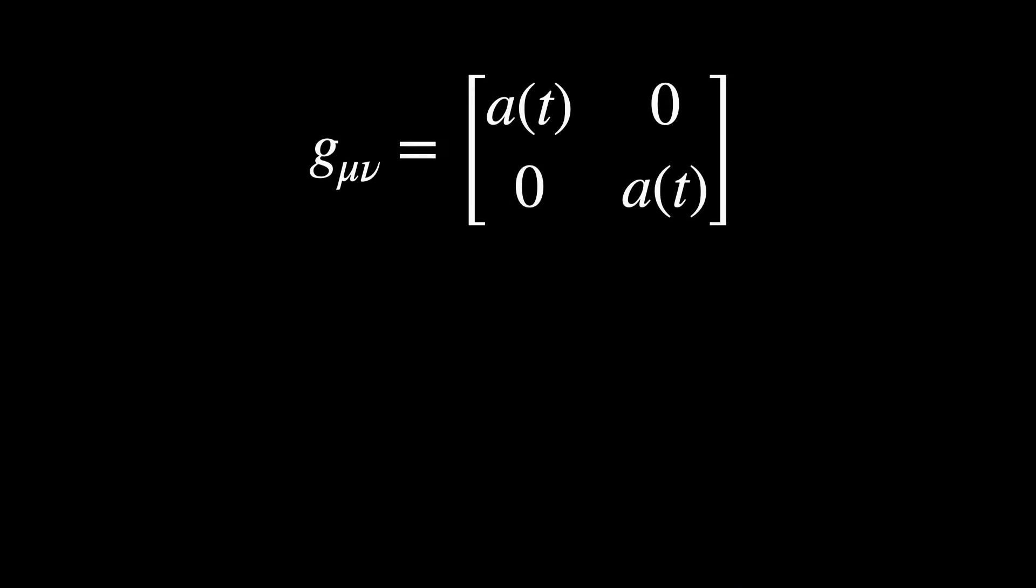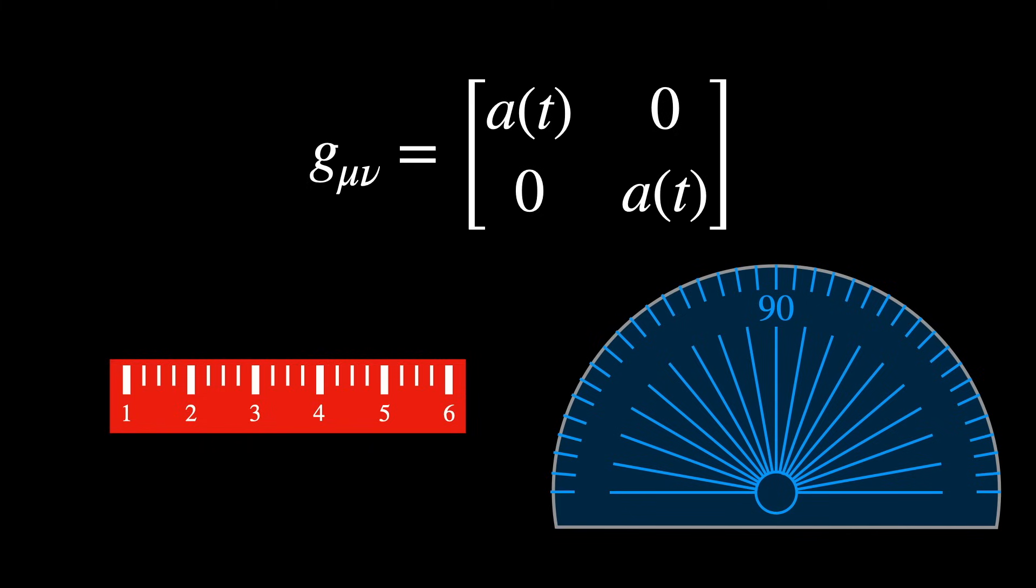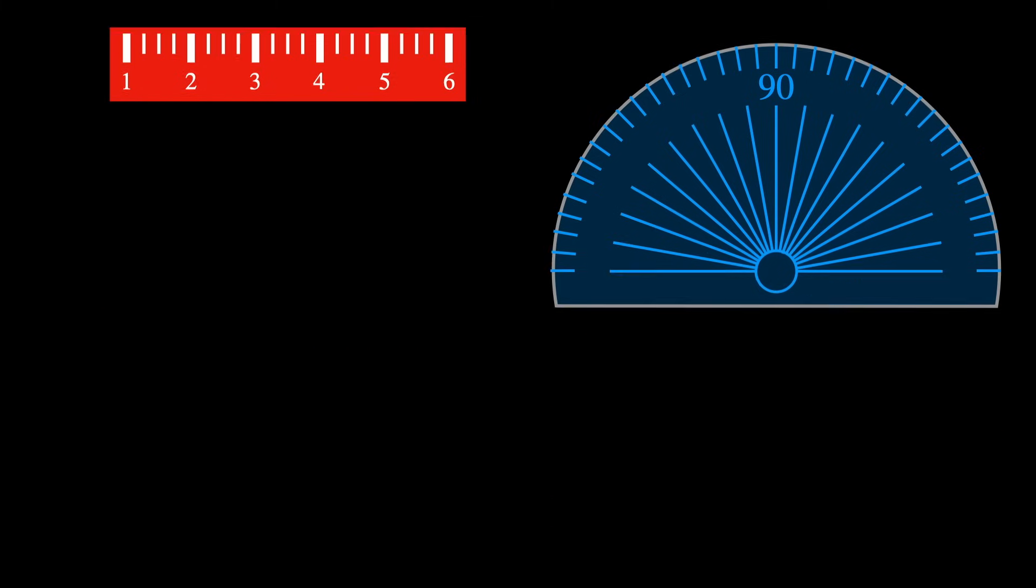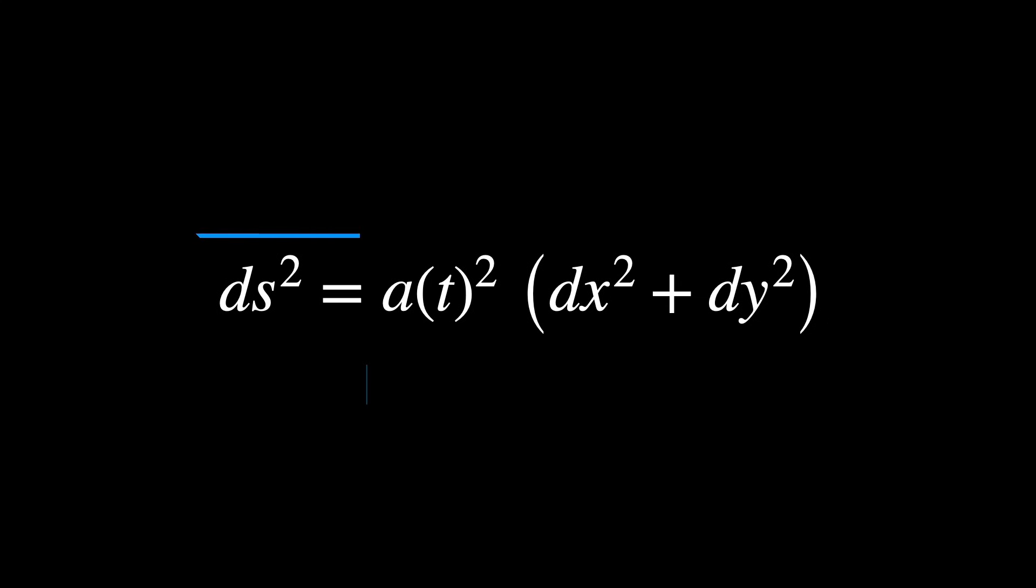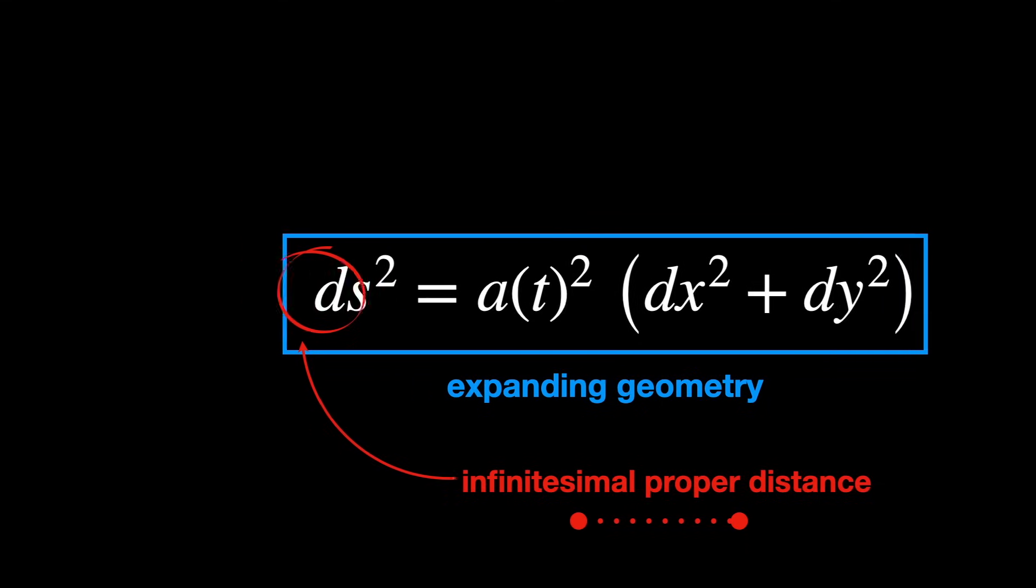Now, let's define a metric in it. In other words, a ruler to measure distances and angles. This metric describes a flat space, but with a time-dependent scale factor A in it. Here, ds is the infinitesimal proper distance between neighboring points.